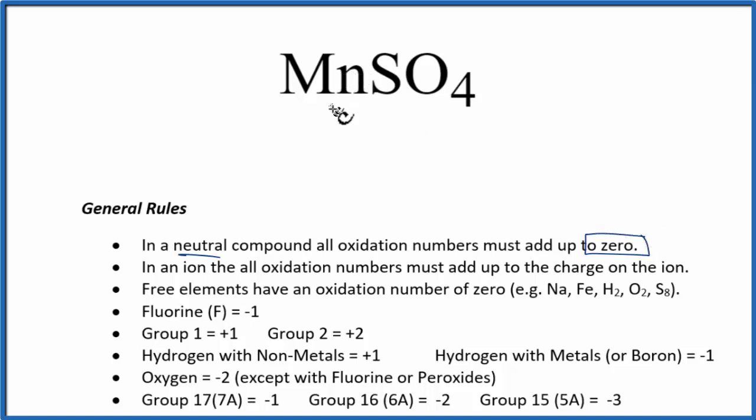Manganese is a transition metal. It has different oxidation states. But we can figure out what this is by looking at what it's bonded to. When we have an ion like SO4, that's the sulfate ion, it's a polyatomic ion, all the oxidation numbers add up to the charge on the ion.